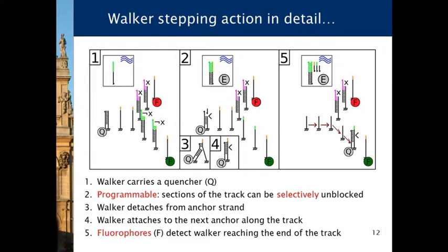The walker's stepping action in more detail is as follows. On this DNA tile, we print these tracks — that is, we attach single DNA molecules — and you can form them into branching circuits, so it's a decision tree. Initially they are all blocked, meaning you attach a DNA strand so that no other strand can attach to it at the top. They are programmable in the sense that you can selectively decide which sections of the track to unblock. You unblock them by adding a specific enzyme that will cut these sections.